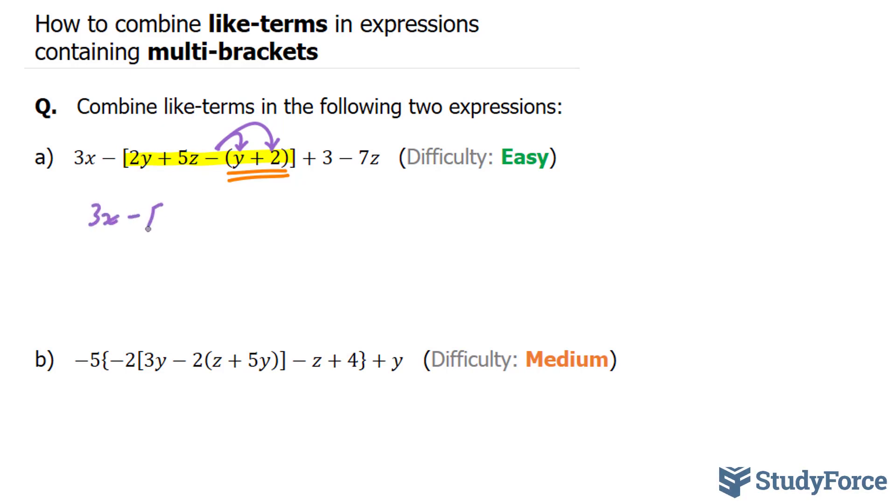3x minus 2y plus 5z minus y minus 2, square bracket closes, plus 3 minus 7z. Look what happened here. By multiplying this negative into the two terms, the round brackets disappeared.